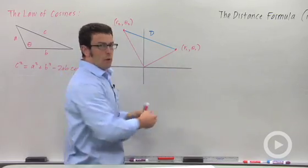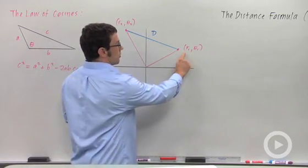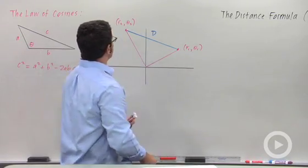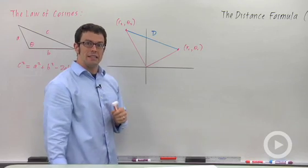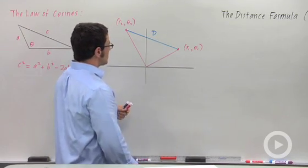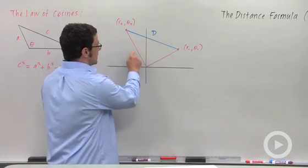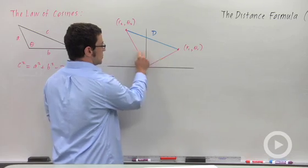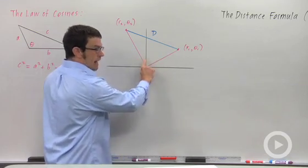I've graphed two points in polar coordinates. One is r1 theta1, the other is r2 theta2. I want to find the distance between these points. In order to do this, I need the length of these two sides and this angle.